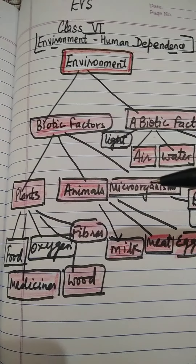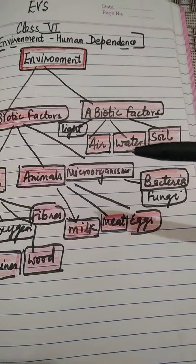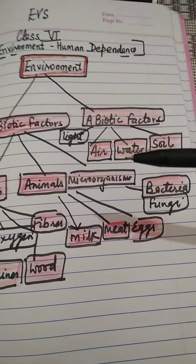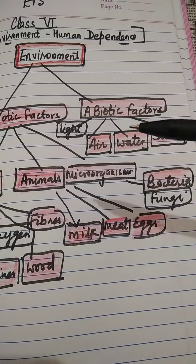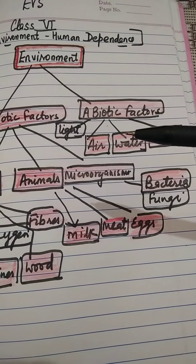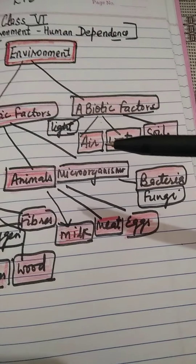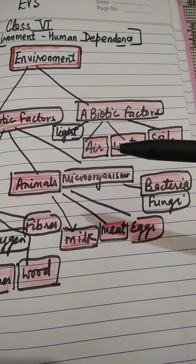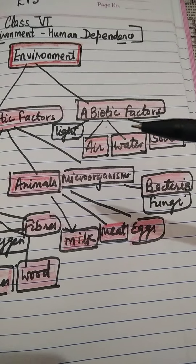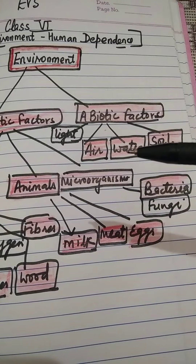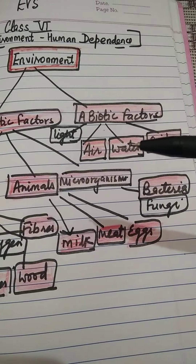Now, when we talk about abiotic factors, they are air, water, and light and soil. Human beings need air for respiration, combustion, and many other activities of daily life. Human beings need water for drinking, cleaning, irrigation, and to produce electricity.